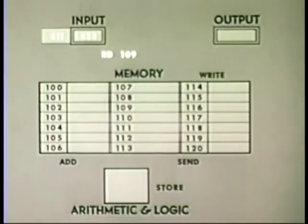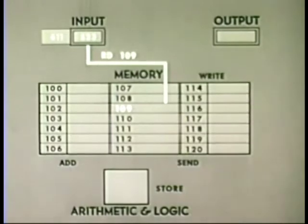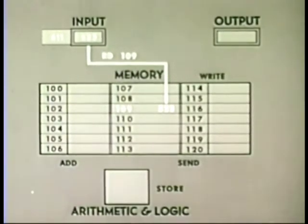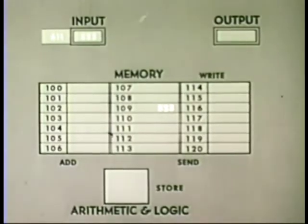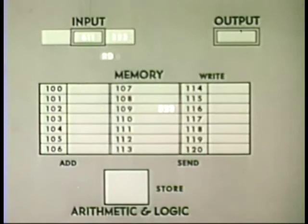To the electronic circuitry, read 109 means read the next number from the input into memory location 109. The next instruction would be read 101.